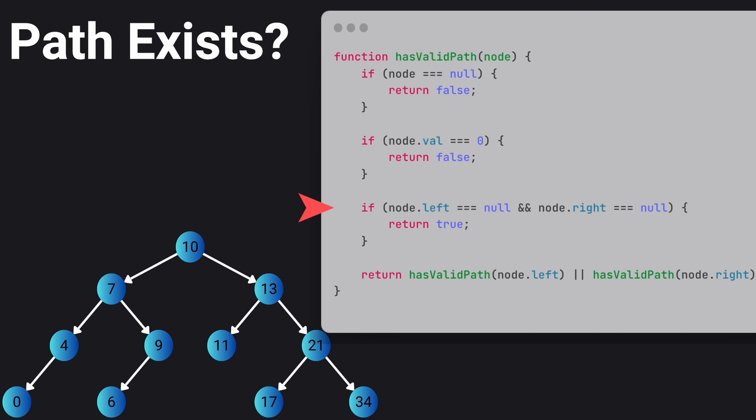Our base case is when there is no left and right children of the node, which means that this node is a leaf node, we will return true in this case. Otherwise we recursively check the left and right subtrees. If either subtree returns true, meaning a valid path is found, we propagate true upwards.